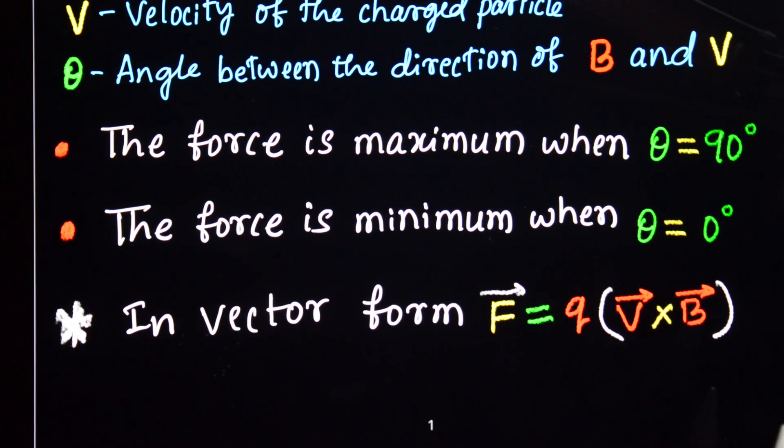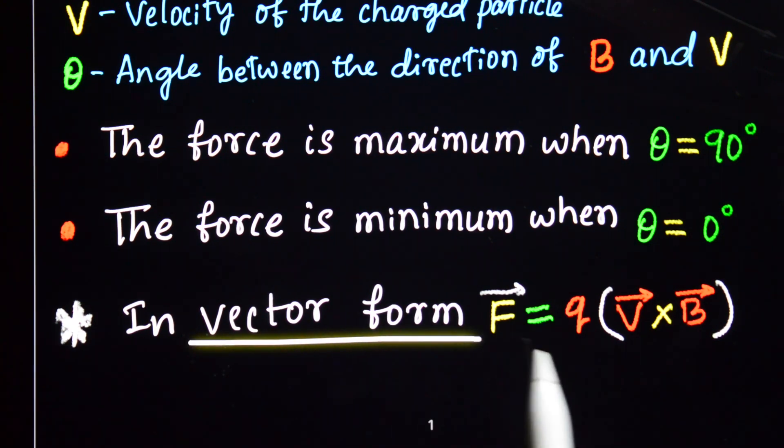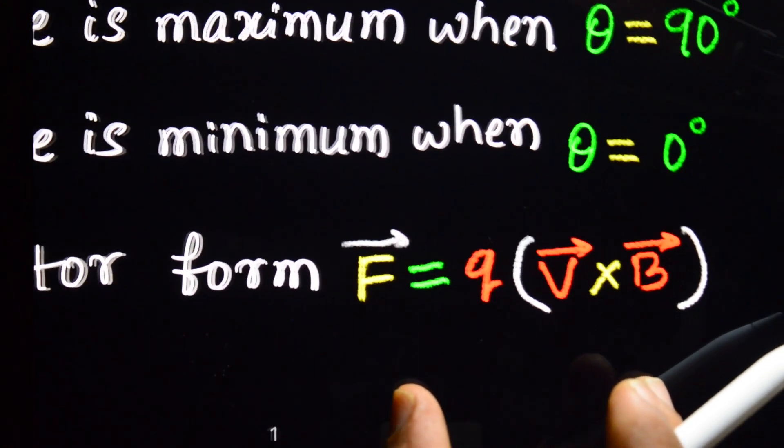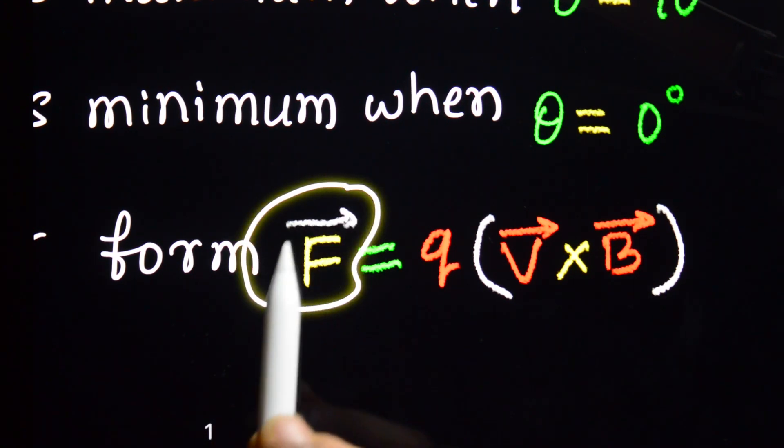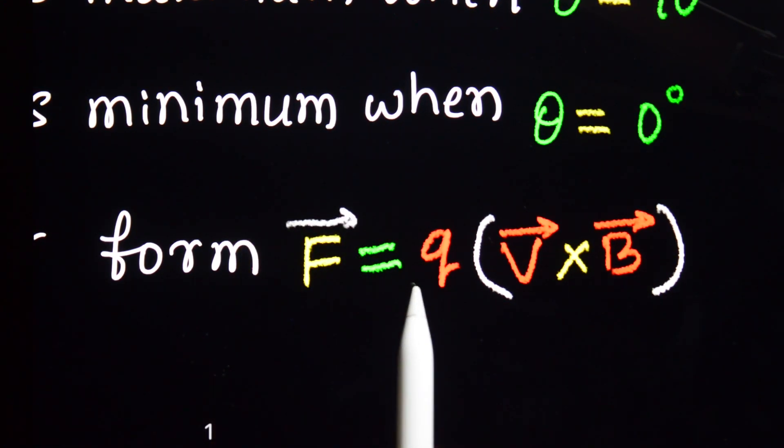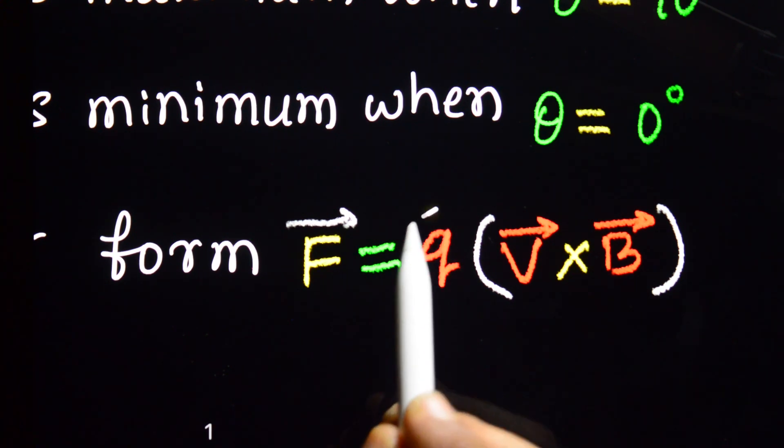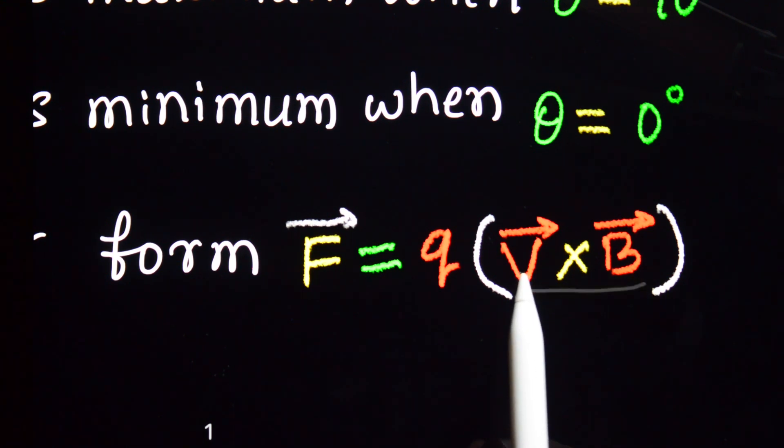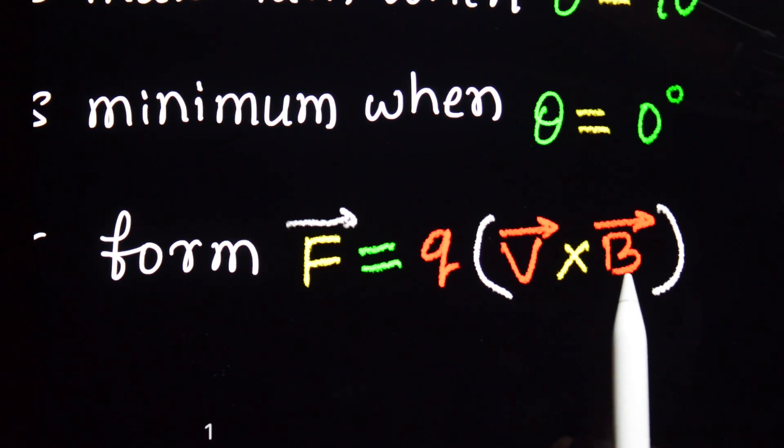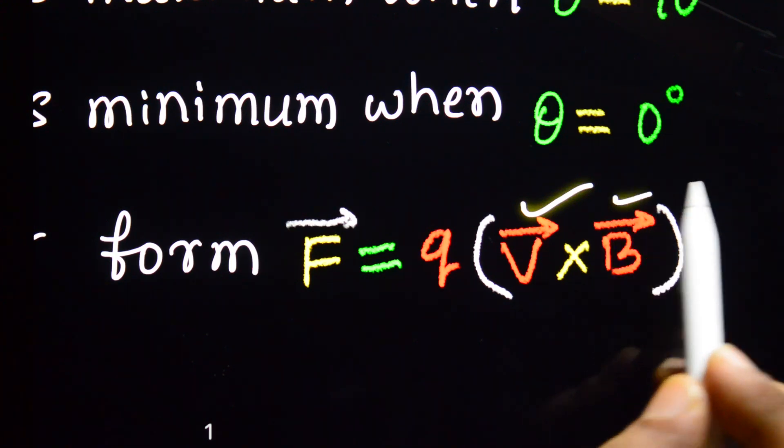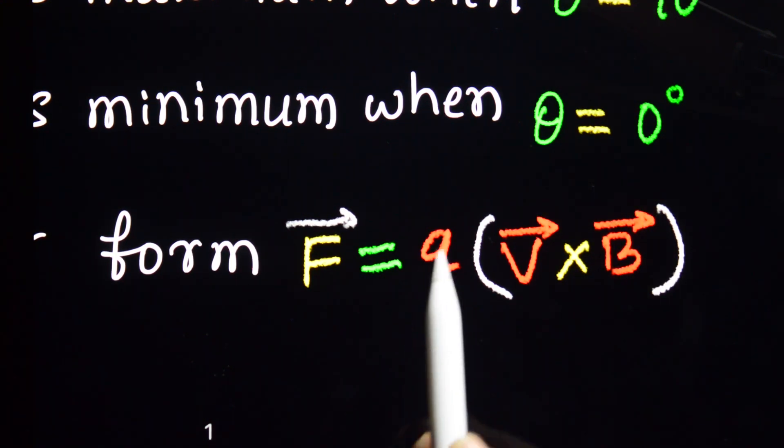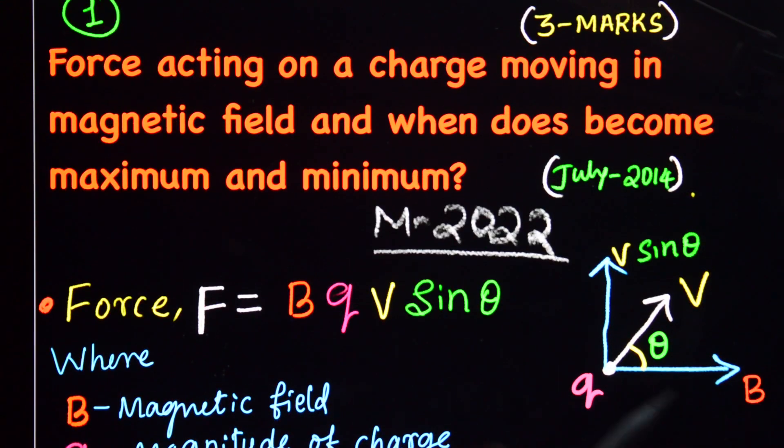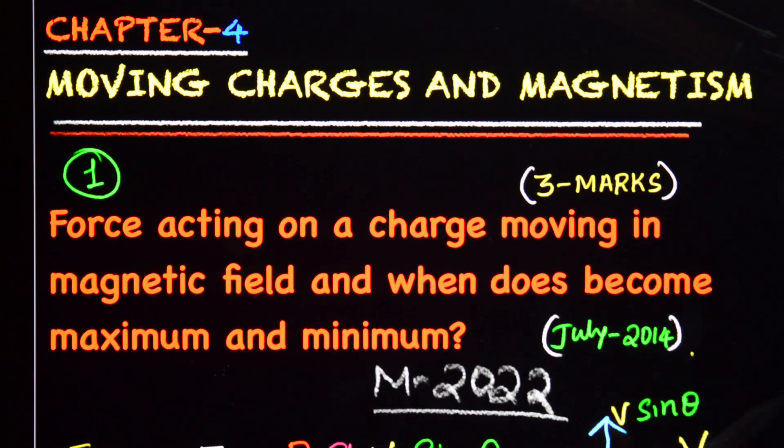And I think this is enough for 3 marks. And you may ask for 1 mark also or 2 marks in the vector form. The force experienced by the charged particle F in magnetic field is equal to Q, magnitude of the charge, into V cross B. V is the velocity of the charged particle, B is the magnetic field. Here these two are a vector quantity, cross product into magnitude of the charge. And this is enough for 3 marks.